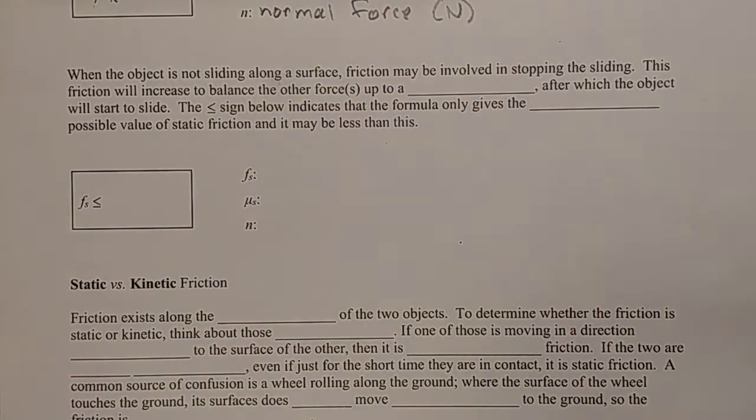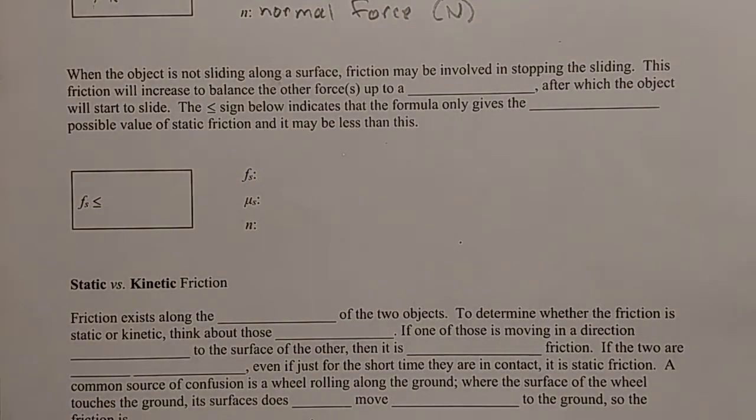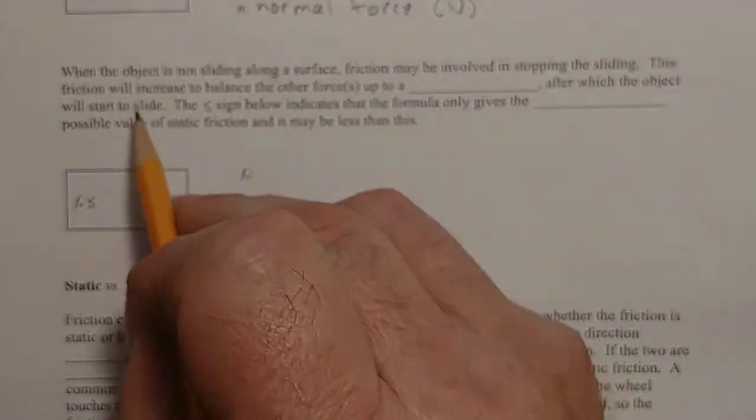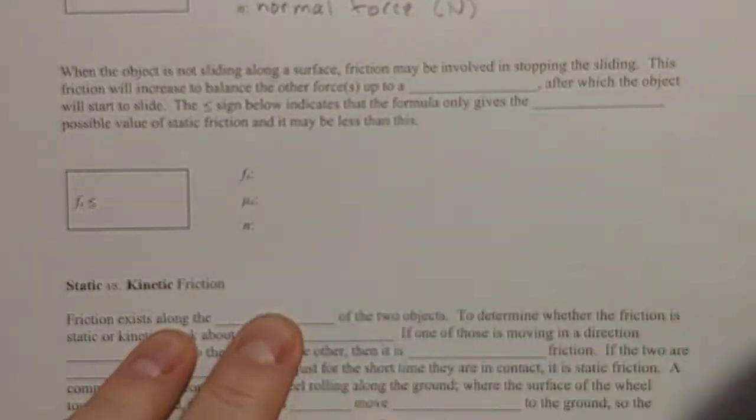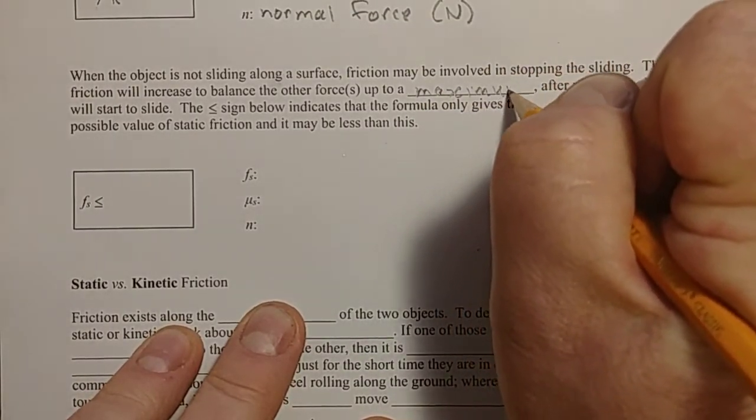This friction will increase to balance your force. So if you're pushing a box with a force of one newton, then static friction can push back with one newton. So you push a little harder, two newtons, friction pushes back with two newtons. You go harder, three newtons, pushes back with three newtons. Then you push four newtons, and it can't push back that four. You sort of win, and so it starts to accelerate. So friction will increase to balance the other forces to stop the motion up to a maximum, after which the object will start to slide.